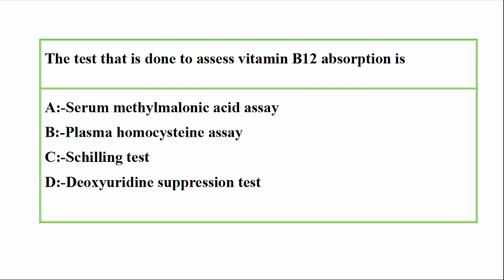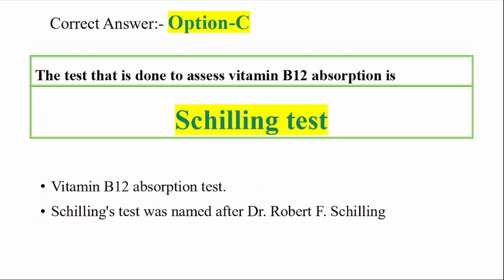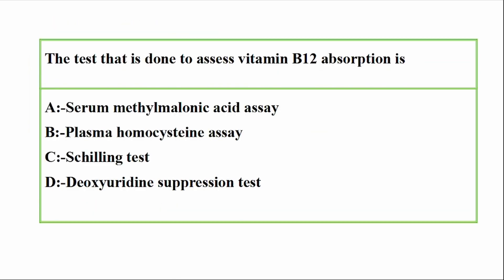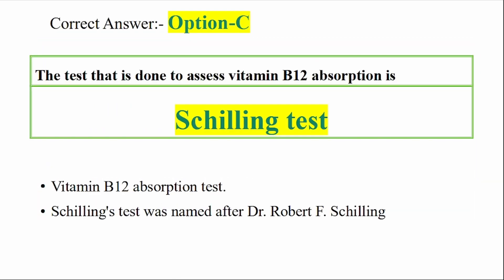Question: The test that is done to assess Vitamin B12 absorption — options include serum malonic acid, plasma homocysteine, and Schilling test. Correct answer: Option C — Schilling test. The test done to assess Vitamin B12 absorption is the Schilling test.